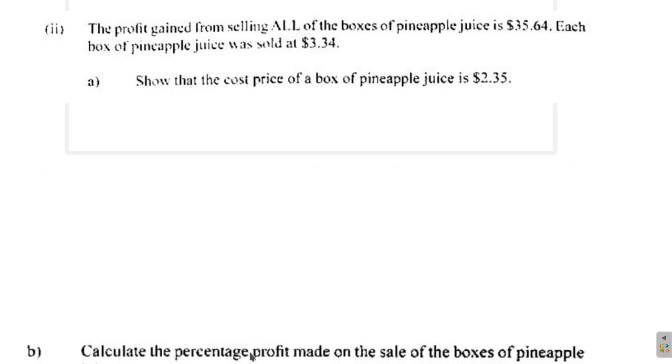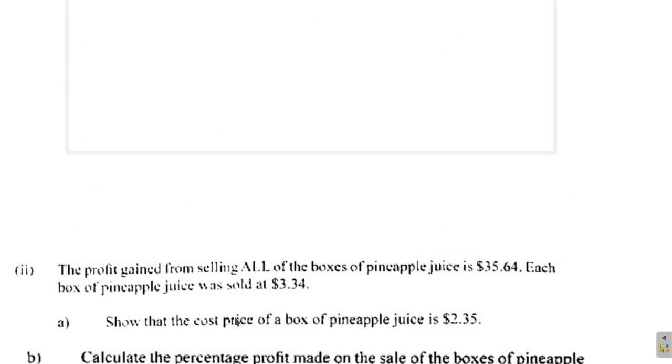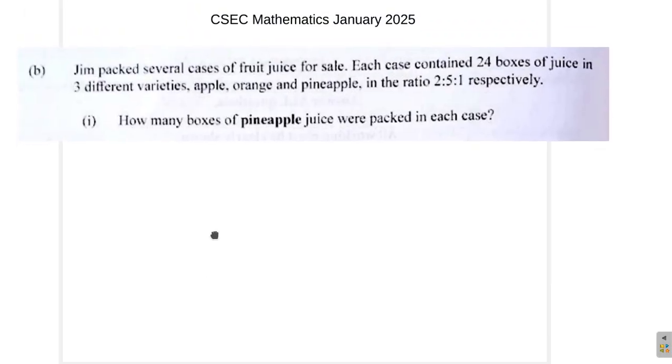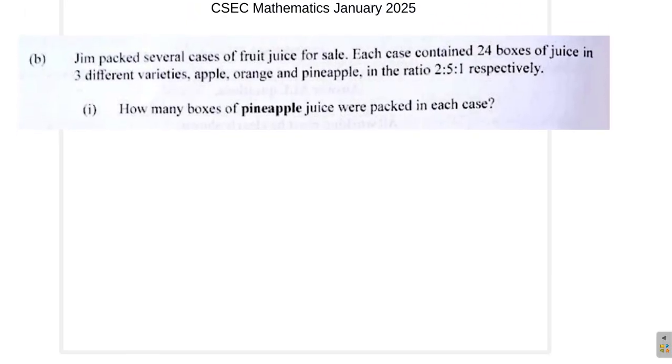All right, let me draw down the next parts of the question to make space for working. Here, you have 24 boxes, ratio 2 to 5 to 1. Now, if you consider, remember, we're not just doing the maths here. We want to look at the reasoning behind why we do what we do. So, you have 24 boxes. So, let me draw some spaces here.